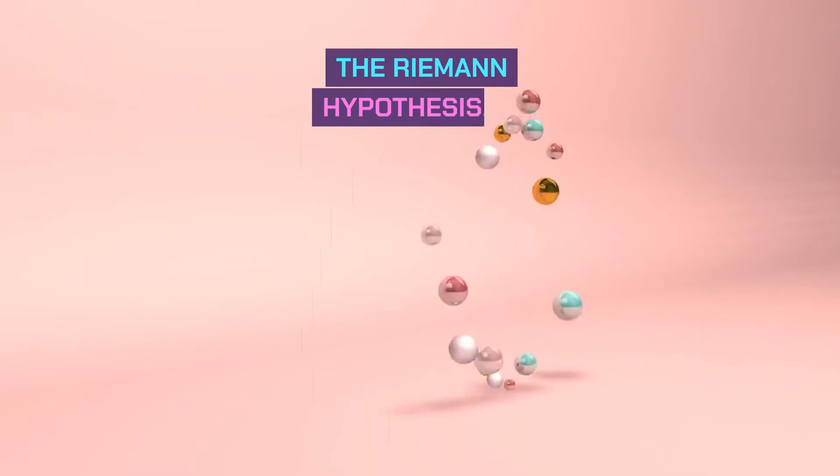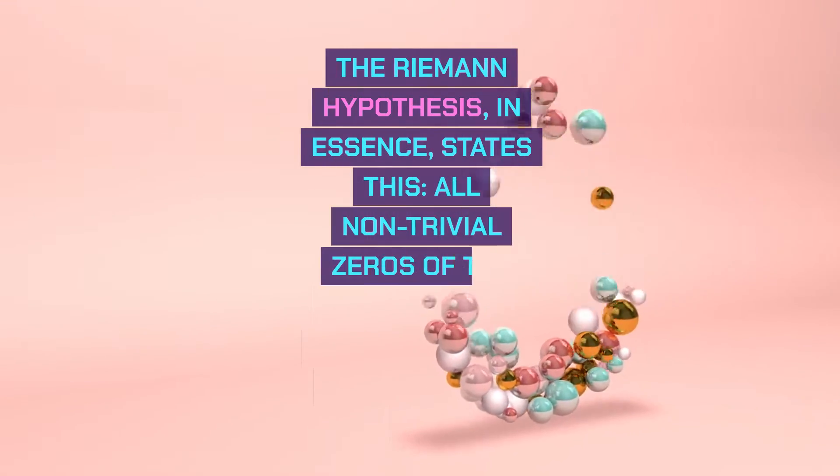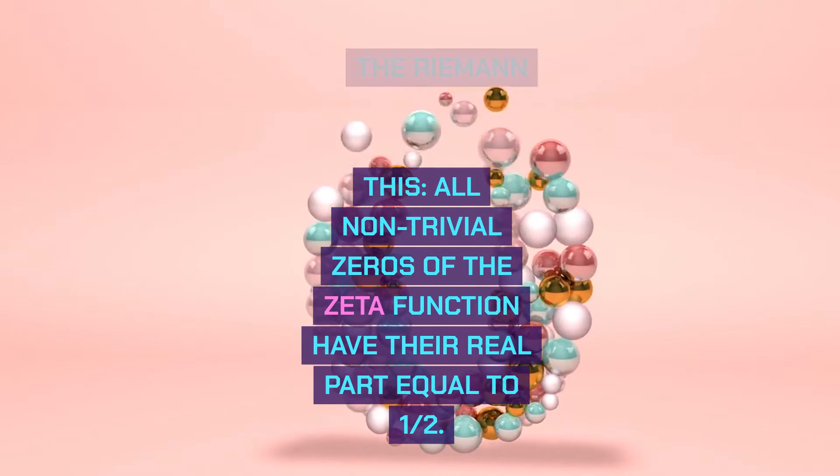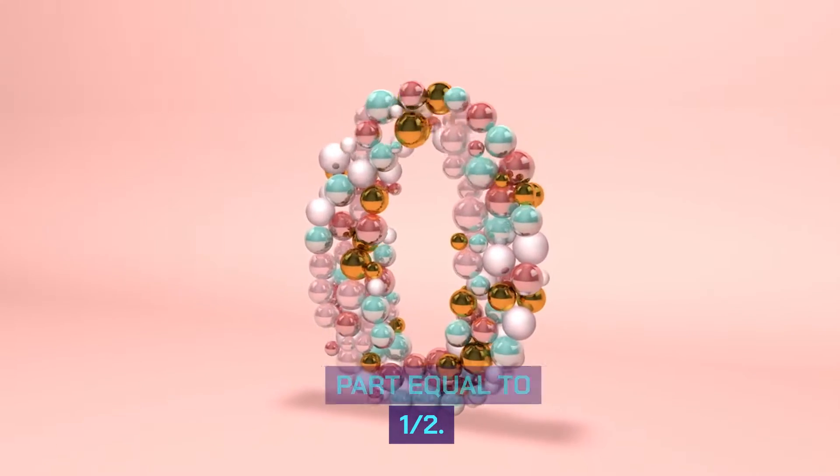The Riemann hypothesis, in essence, states this: All non-trivial zeros of the zeta function have their real part equal to one half.